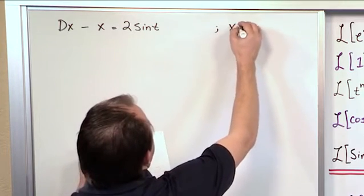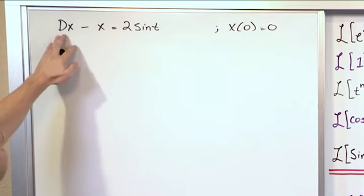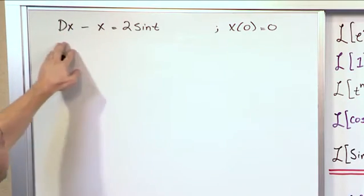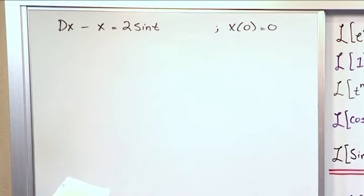The initial condition is x at zero is equal to zero. And notice that there's only a first derivative anywhere in this equation. That means there's only one initial condition required to solve it. So that's what's given to us.